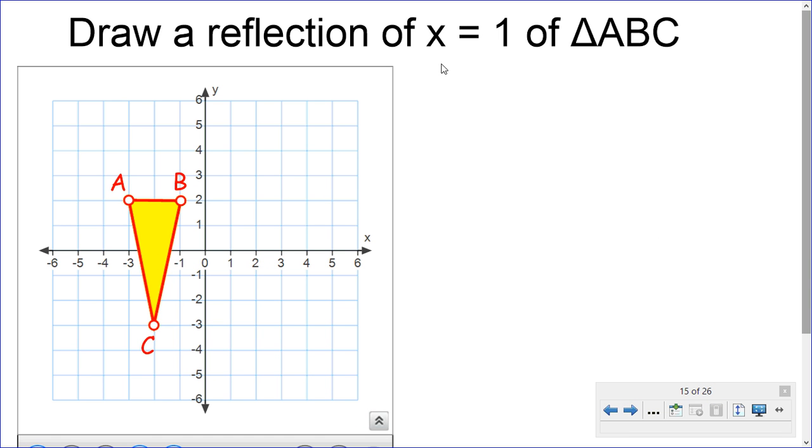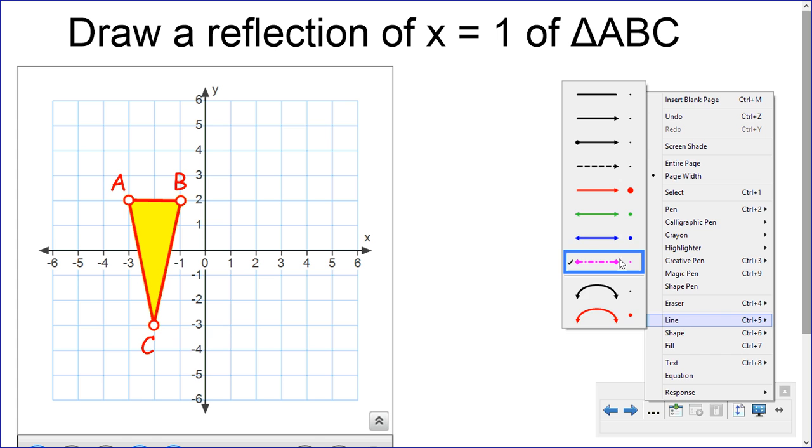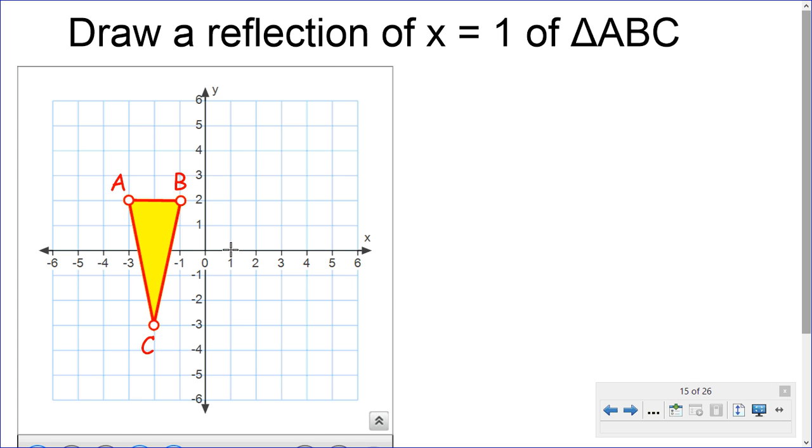Draw a reflection of x equal to 1 of triangle ABC. So, here's triangle ABC, and we want to draw a reflection of x equal to 1. So, we need to draw, get our line tool again, and this time we're going to x equal to 1. Well, x equals 1 right here, 1, 0, and here's 1, negative 1, x equal to 1, negative 2. So, we're looking to draw some type of line of reflection against that line there.